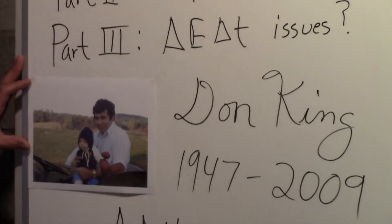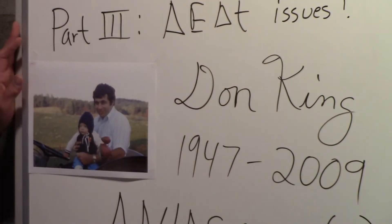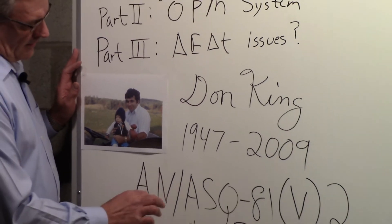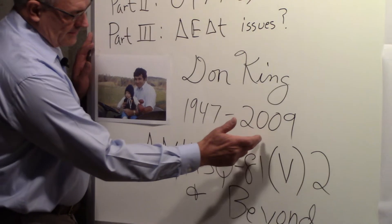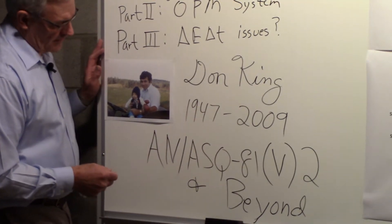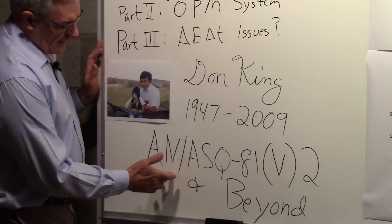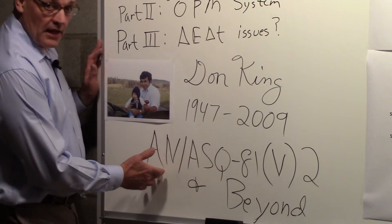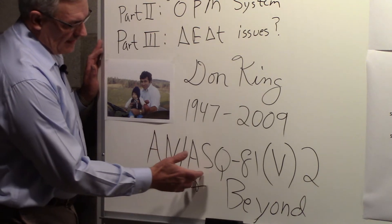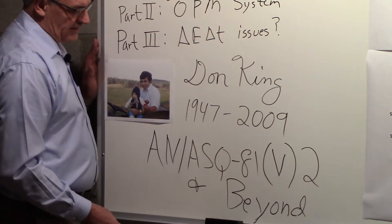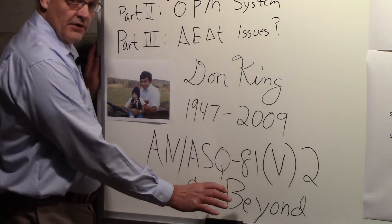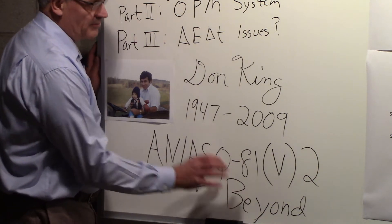This is a photograph of a friend of mine Don King and we worked for years together on optically pumped magnetometers. He was born the same year I was and we lost him a number of years ago. We worked a lot together on the ANSQ-81V2 magnetometer and on some very interesting things that went beyond that.